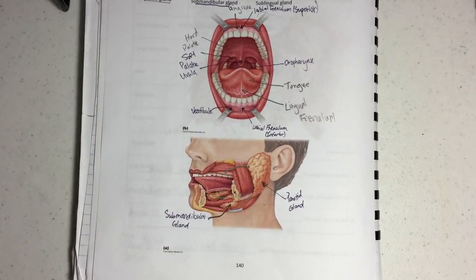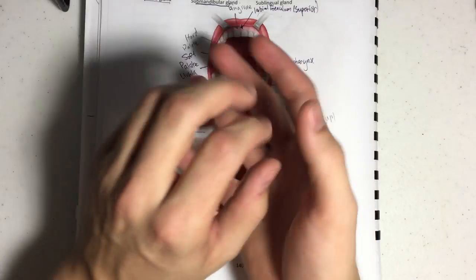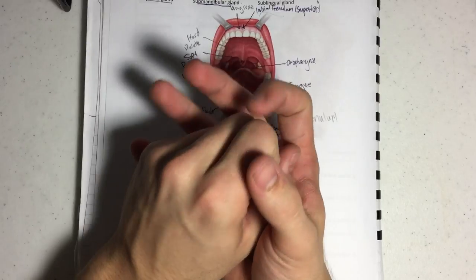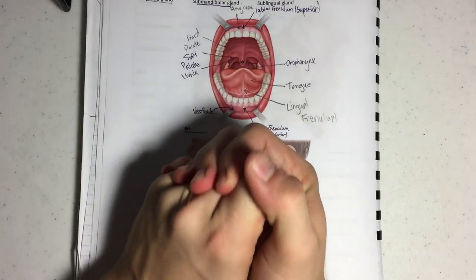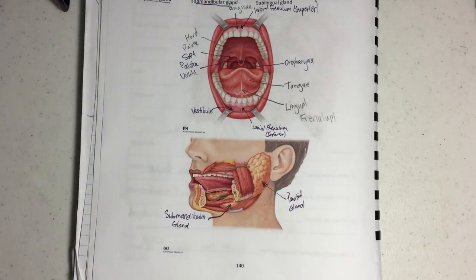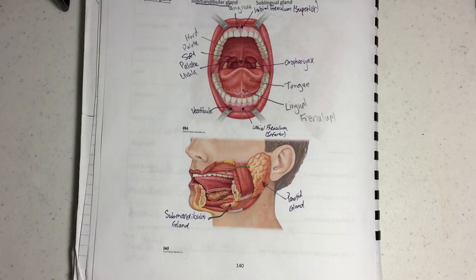The tongue is a big organ in the mouth made of skeletal muscle. Its job is when you chew to take in that food and as you chew it up, turn it into a food ball. That food ball is called a bolus, and when the bolus moves to the back of the mouth, the tongue's job is to initiate swallowing.